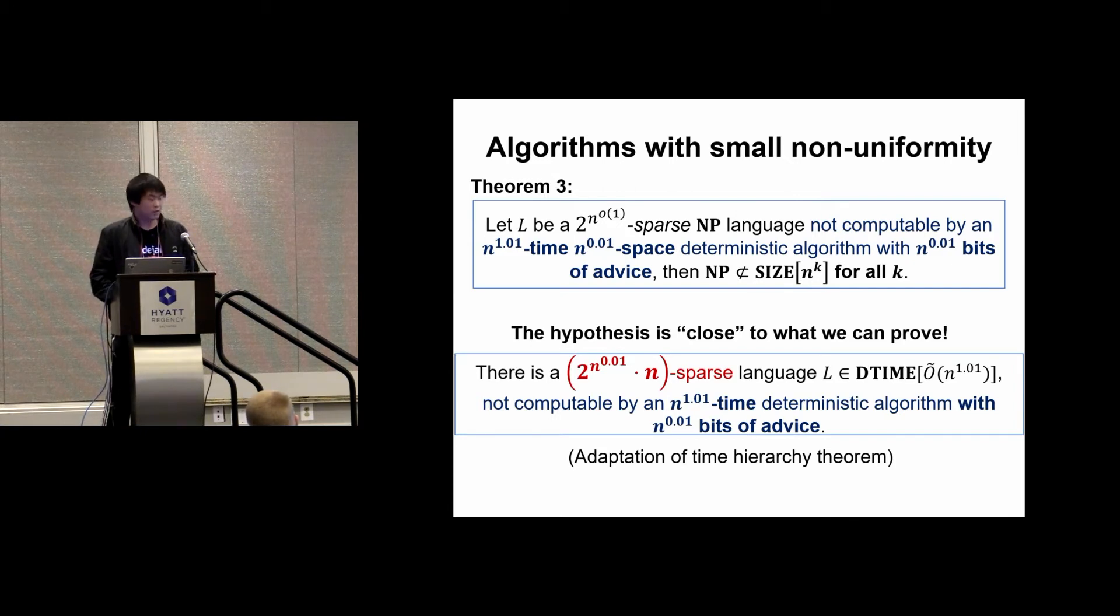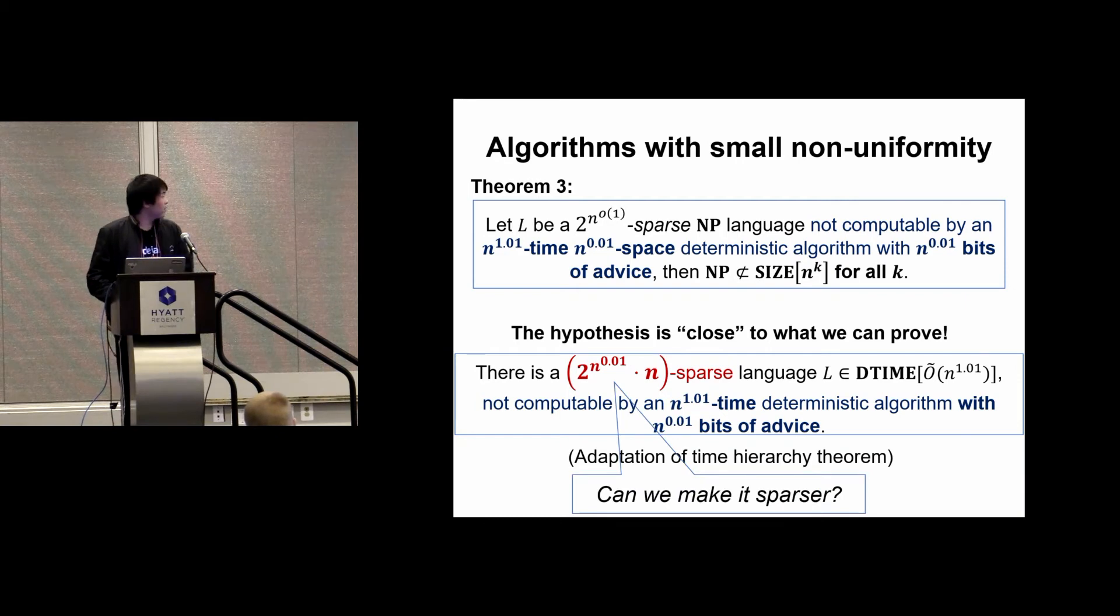The hypothesis looks pretty close to what we can prove. We can construct a language that has this lower bound even without the space constraint, and this language is even in polytime, not only in NP. However, the sparsity is not enough for magnification. We could only get 2^(n^0.01) times n sparsity, while for magnification we require 2^(n^0.01). If we could make it sparser, we would have breakthrough results.